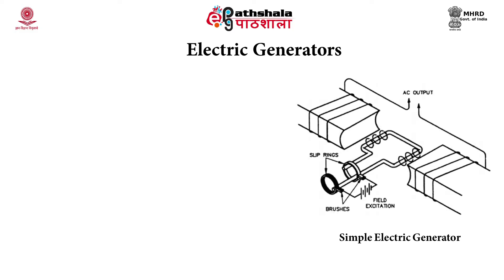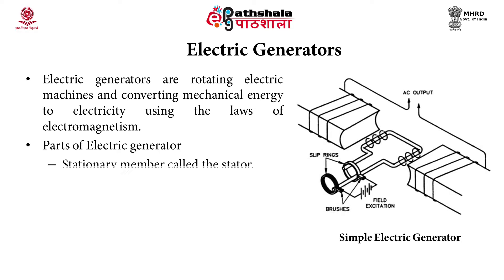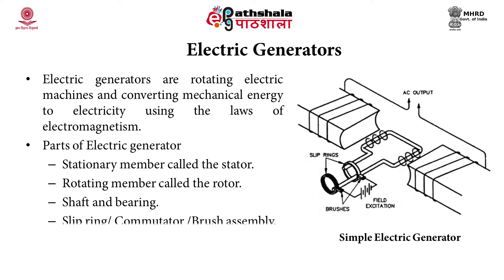Let's see what an electric generator is. These are rotating electric machines that convert mechanical energy to electricity using the laws of electromagnetism. The parts of an electric generator are: stator, which is a stationary member; rotor, which is a rotating member; shaft and bearing; slip ring, commutator, or brush assembly; and armature and field windings.